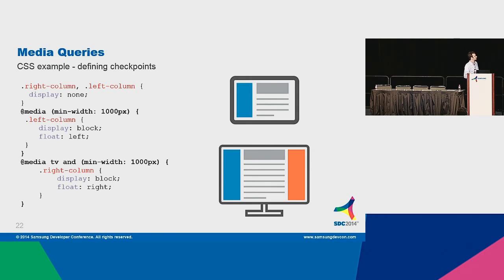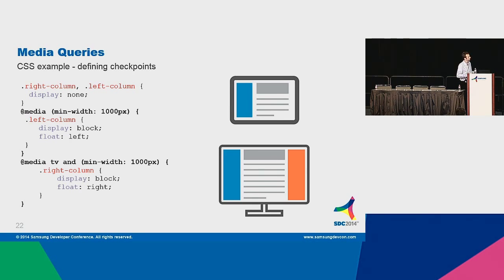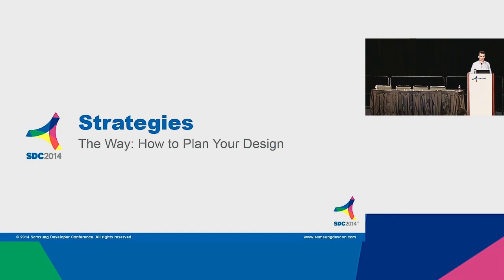And here is an extension. If we normally define the right column and left column as not displayed on the device, and you match the device width at 1000 pixels, the left column will appear. Additionally, the same condition combined with a device type — here we have 'tv' — the media query will match and display an additional right column.